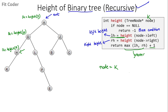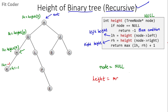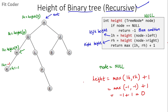At K, the left height is height(null) = -1 (base condition). We then calculate K's right height by calling height with K's right child, also null, which also returns -1. So for K, both LH and RH are -1. The height of K is max(-1, -1) + 1 = 0. So height of node K is 0.